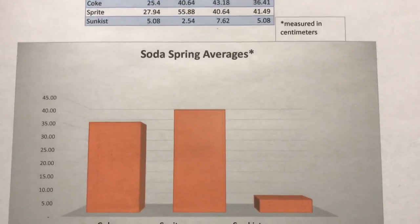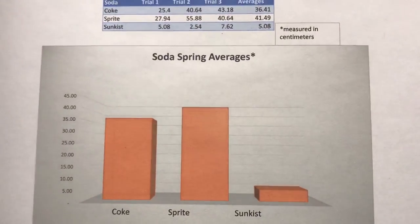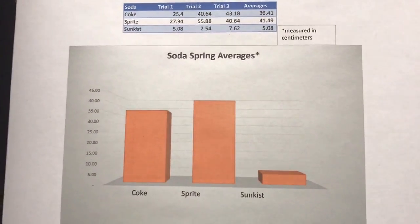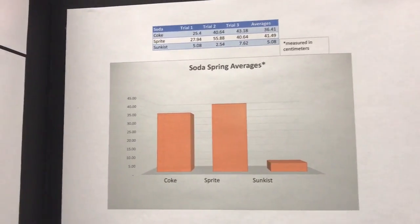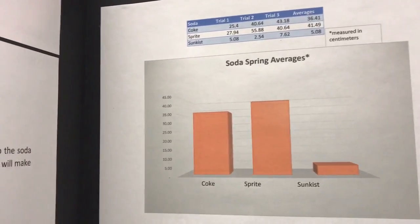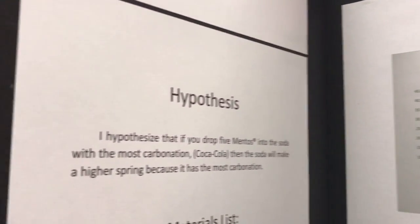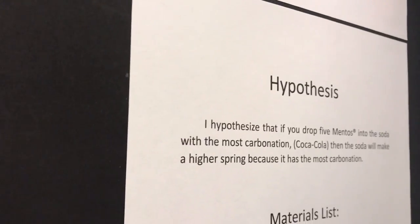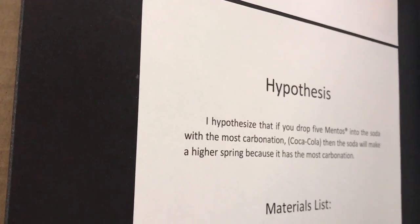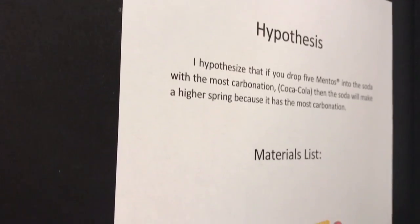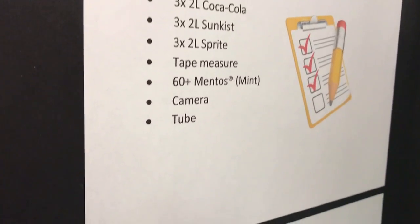When you drop a Mentos into the soda, the small dents in the Mentos called nucleation spots start forming CO2 bubbles. Since the CO2 is in liquid form and the cap is open to the air, the CO2 forces its way out.